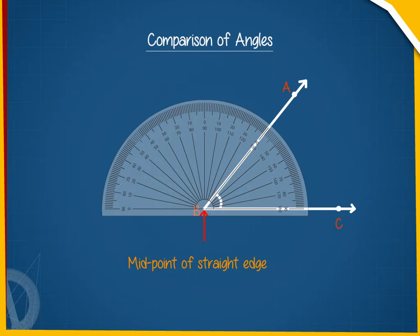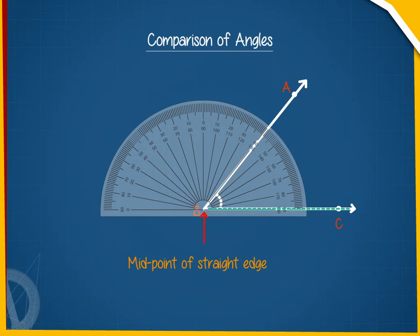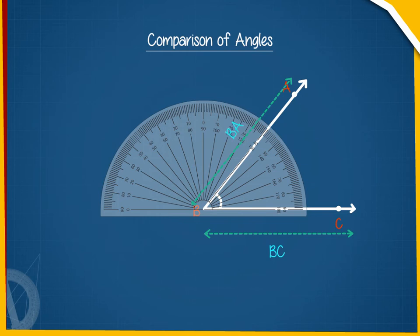Now, we have to adjust the protractor so that BC is along the straight line edge of the protractor. Let us now read that scale which has the zero mark coinciding with the straight edge, i.e., with ray BC. The mark on the curved edge coinciding with BA gives the measure of the angle ABC.